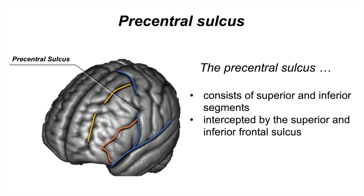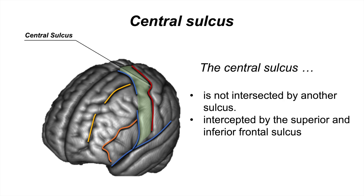The precentral sulcus is the anterior border of the precentral gyrus, considered the primary motor cortex. The central sulcus is the precentral gyrus' posterior border and the postcentral gyrus' anterior border. It should be noted that no sulcus intersects the central sulcus, which is a crucial structural difference between the precentral and central sulcus.